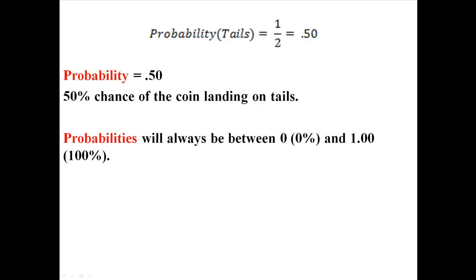So probabilities will always be between 0 and 1, 0 being a 0% chance, and 1 being a 100% chance. If you get a number like 1.2 or negative 3, that's wrong. It always has to be between 0 and 1.